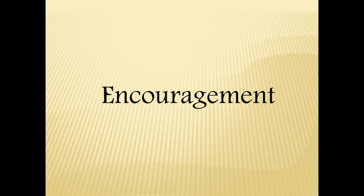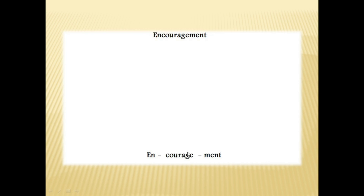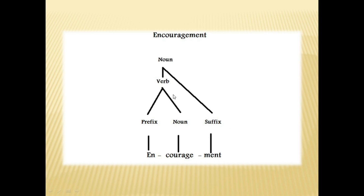The second example is 'encouragement' — an easy word, so you don't have to worry about it. We do the same thing: divide the word into different morphemes. This word is also made up of three different morphemes: 'en', 'courage', and '-ment'. 'En' is a prefix, 'courage' is the root and is a noun, and '-ment' is a suffix. When we combine the prefix 'en' with the noun 'courage', it gives us the word 'encourage', which is a verb. And if we combine the '-ment' suffix with the verb 'encourage', it gives us 'encouragement', which is a noun.